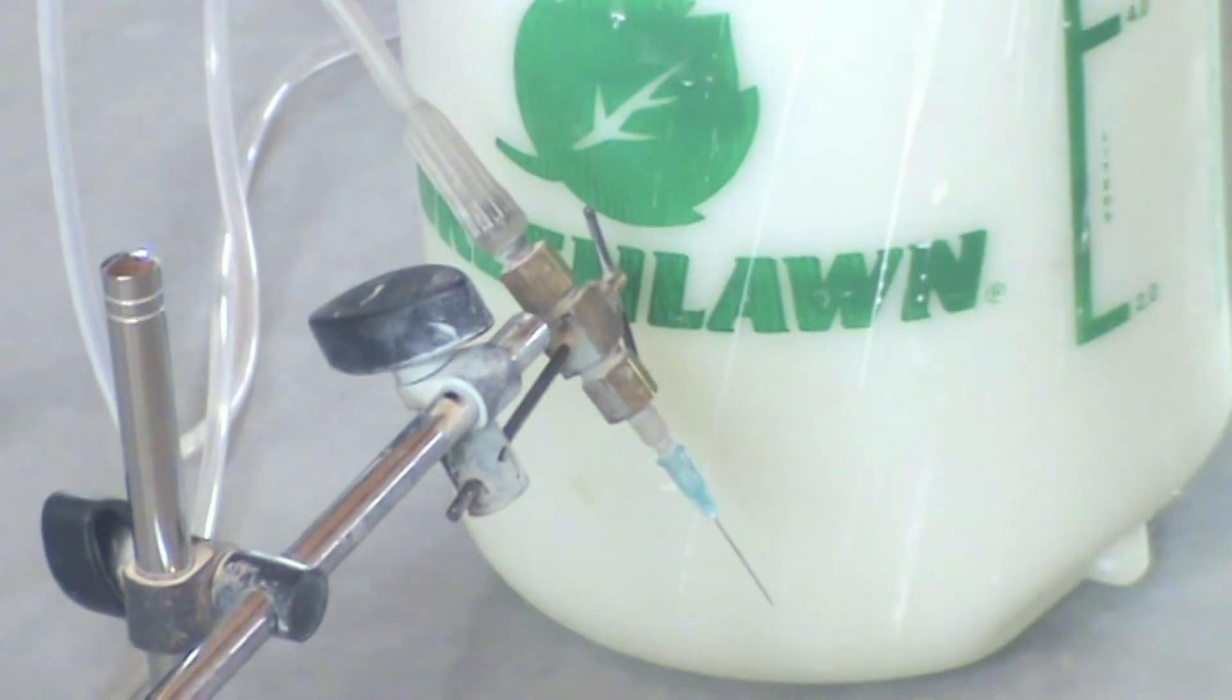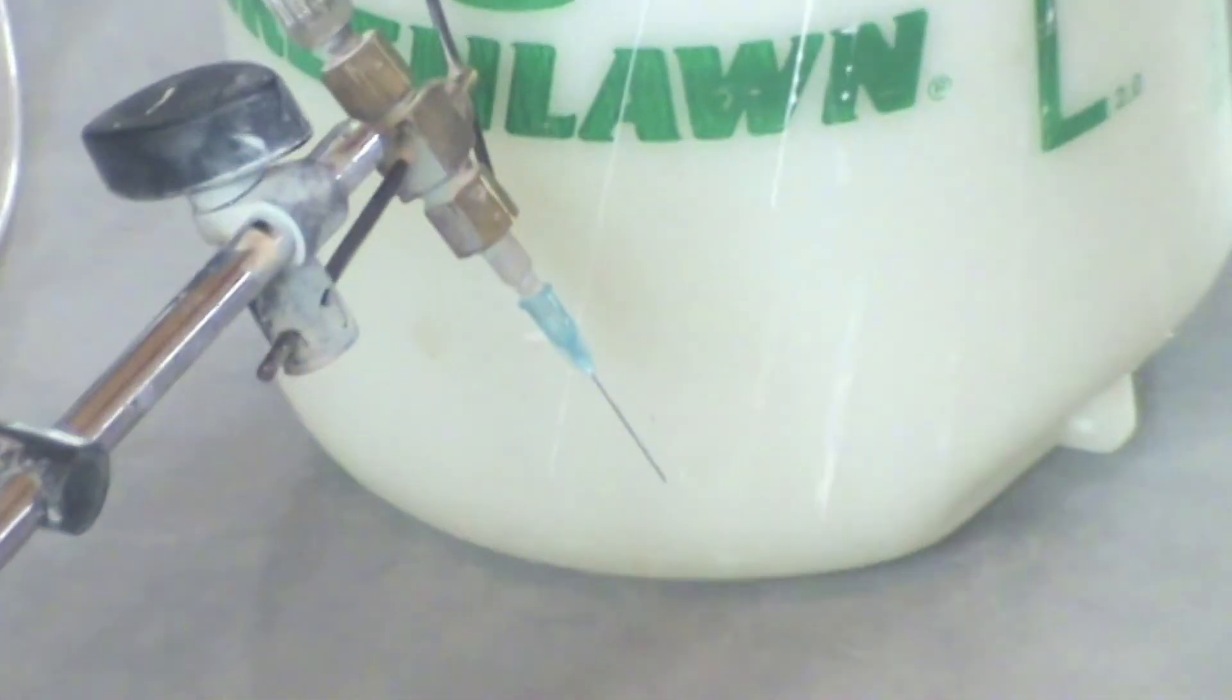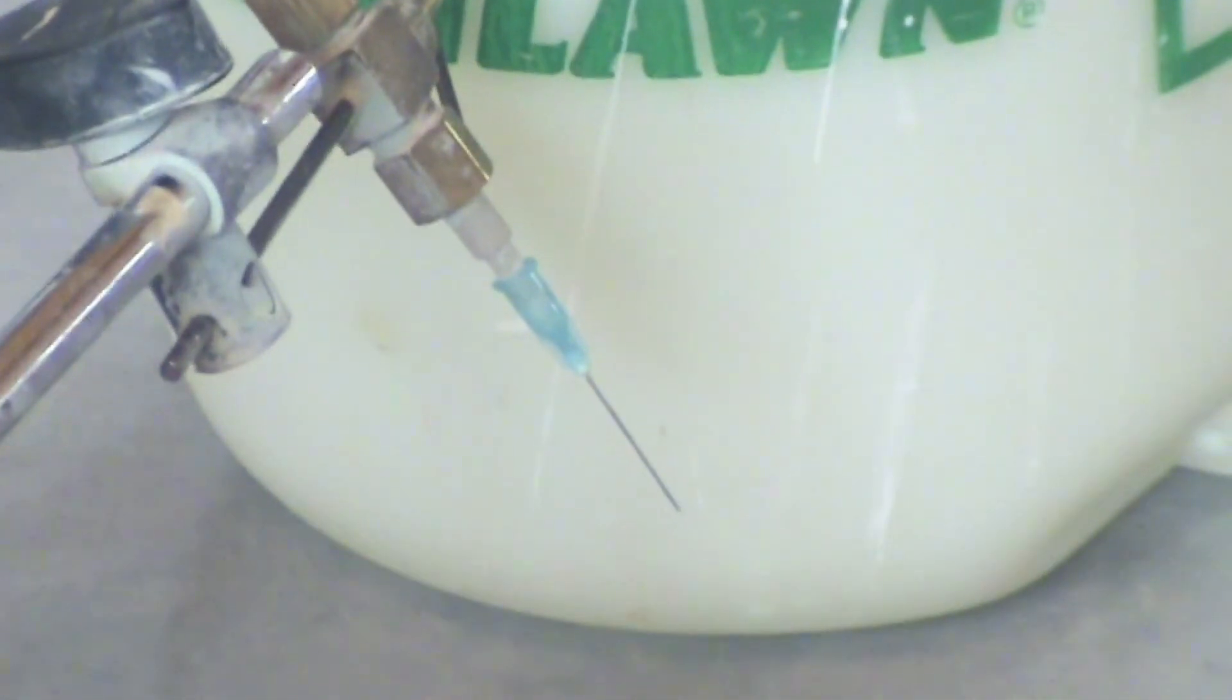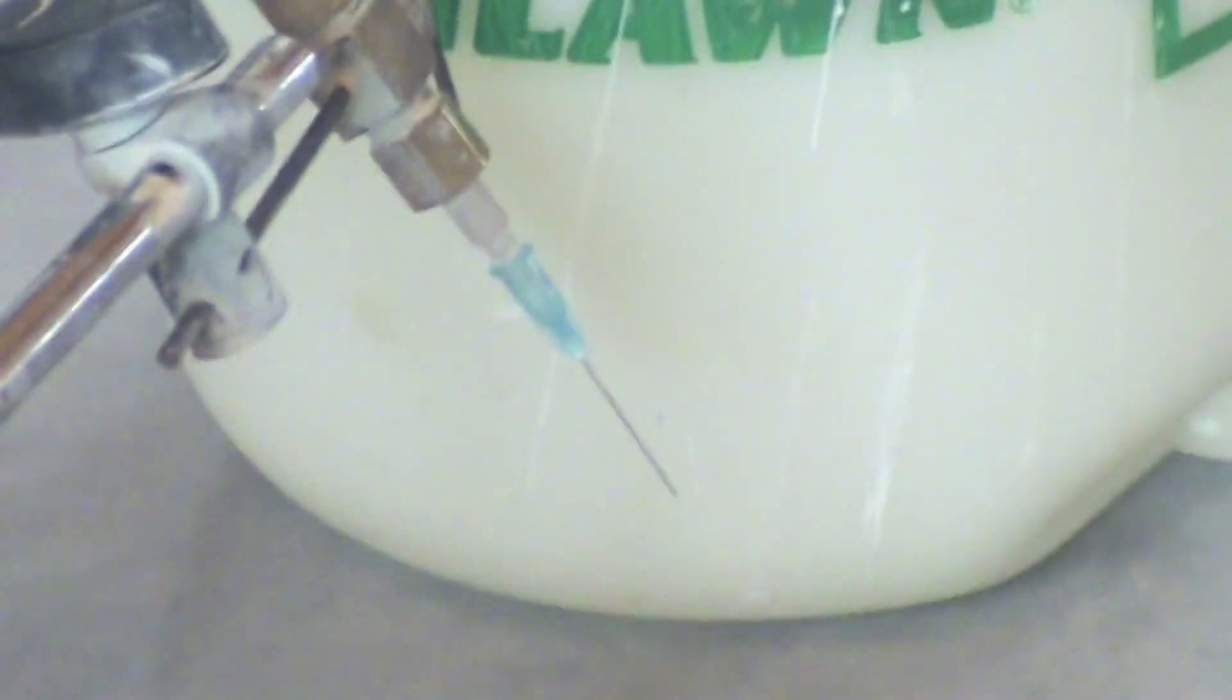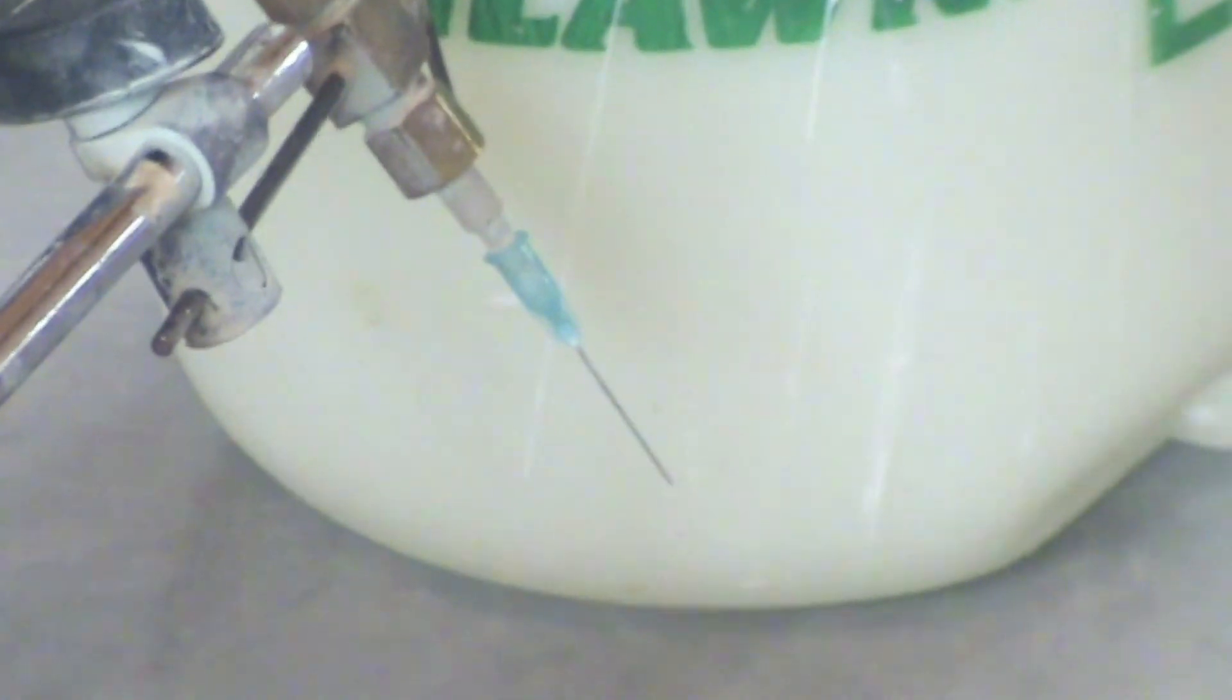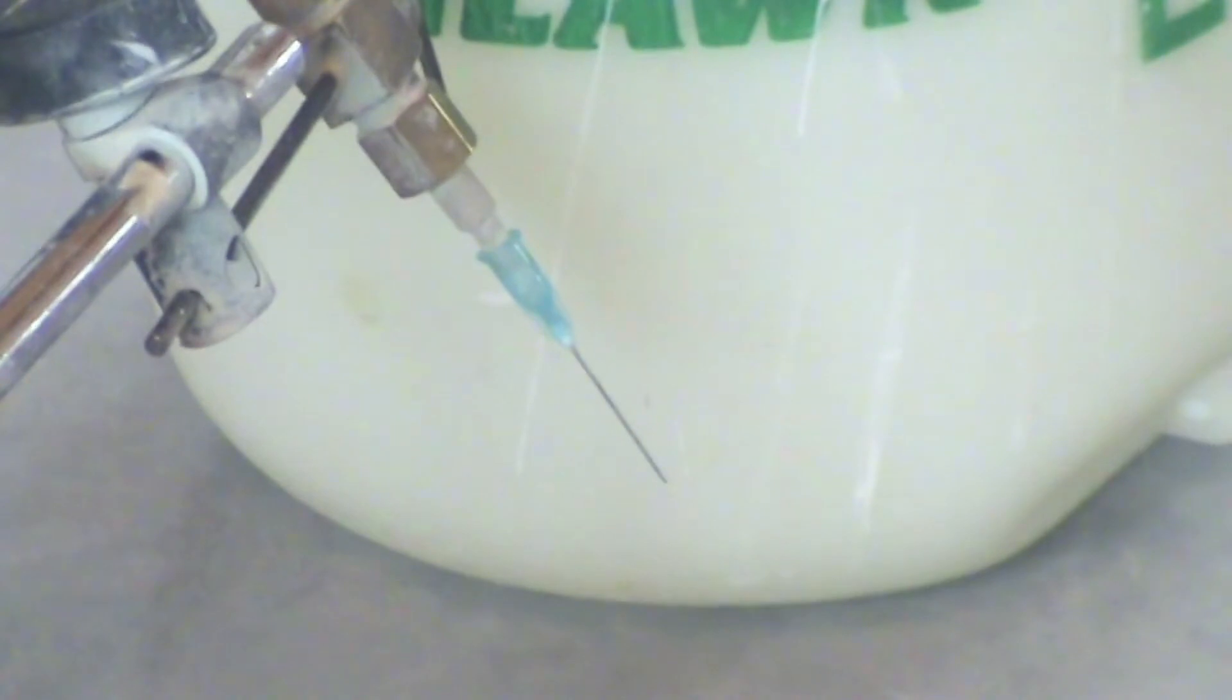It's got a hose coming in one end and on the other end I made a little nylon insert that I can put hypodermic needles on. And you can use pretty much any size of hypodermic needle all the way up to a real heavy gauge depending on the water flow you want.